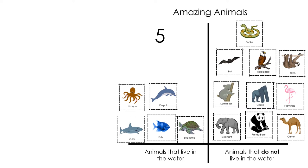How many animals do not live in the water? That's right. Ten animals do not live in the water. Which category has fewer animals? There are fewer animals that live in the water. Five animals are less or fewer than ten animals.